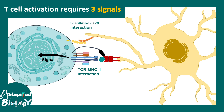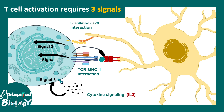The second signal comes from the interaction between CD80/86 on the antigen presenting cell and CD28 present on the T-cell, giving rise to Signal 2. Signal 3 comes from cytokines such as interleukin-2.